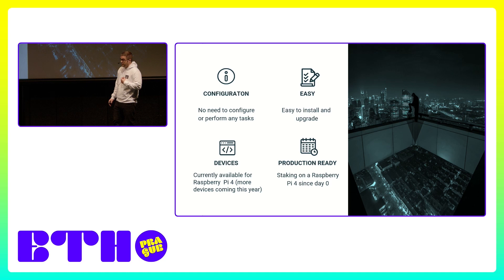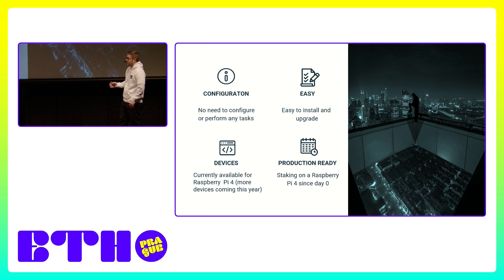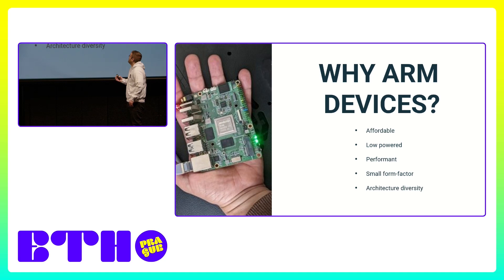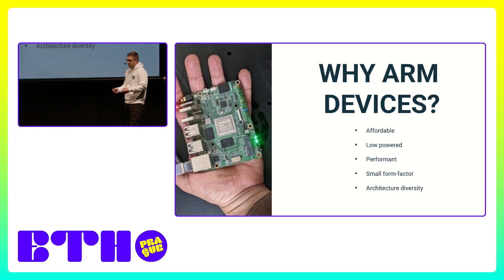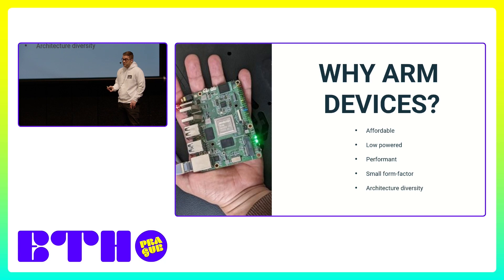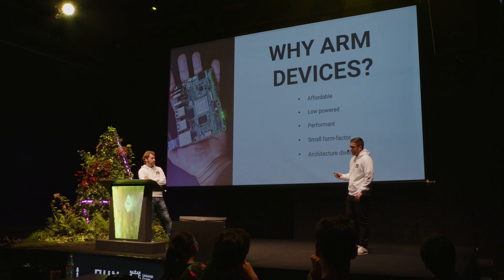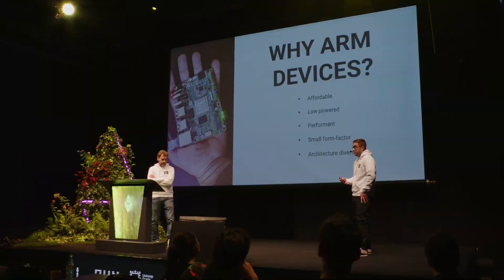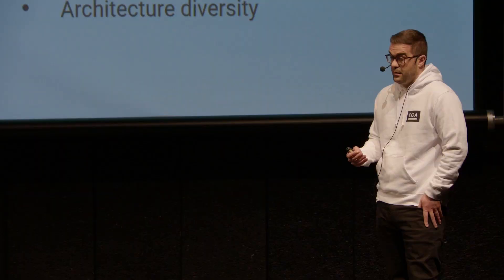We have to make sure this image is production ready, and right now it is, because we have been staking from day zero on a Raspberry Pi 4, with almost no problems, running both an Ethereum 1 and Ethereum 2 client on the same device. Why do we choose ARM devices? First of all, they are affordable — cheaper than an Intel NUC or another small home server. They are also low power. We can run a node under 15 watts, and the Raspberry Pi 4 syncing the whole blockchain runs under 9 to 10 watts.